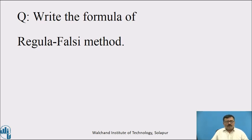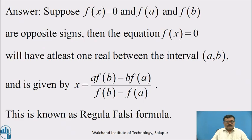I hope all of you have written the answer. Suppose f(x) = 0 and f(a) and f(b) are of opposite signs, then the equation f(x) = 0 will have at least one real root between the interval (a, b), and is given by x = [a·f(b) − b·f(a)] / [f(b) − f(a)]. This is known as the Regula Falsi formula.